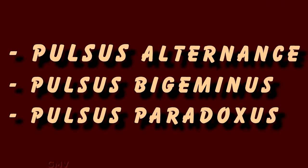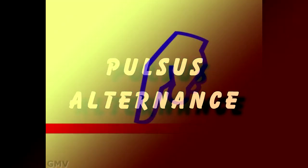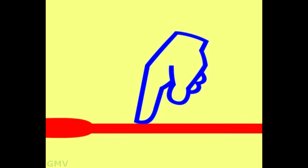Now we shall see some other patterns of pulse. Pulsus alternans. Here we feel alternate high volume and low volume pulse due to alternate normal and weak ventricular contractions seen in left ventricular failure. Note the alternate high and low volume pulse, though the rhythm is normal. This is pulsus alternans.